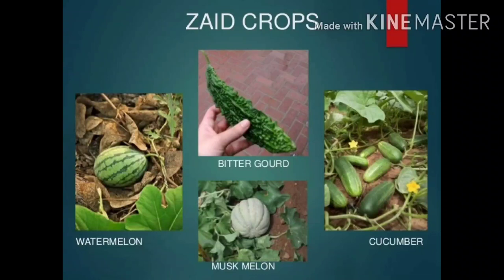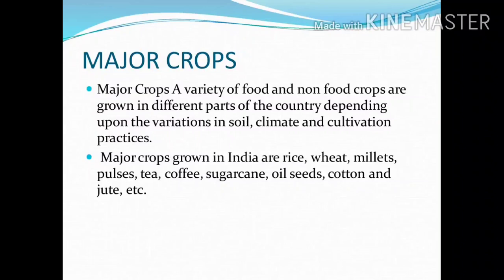Let us see the major crops in India. A variety of food and non-food crops are grown in different parts of the country depending upon the variation in soil, climate, and cultivation practice. Major crops grown in India are rice, wheat, millet, pulses, tea, coffee, sugar cane, oil seeds, cotton, and jute.